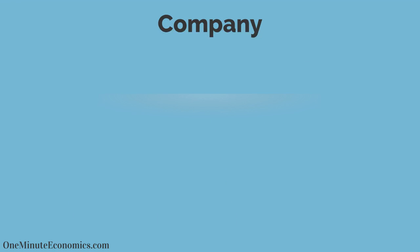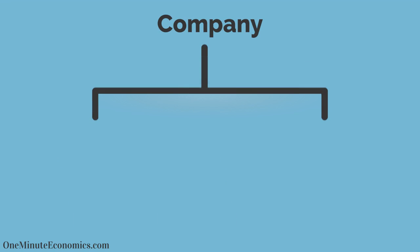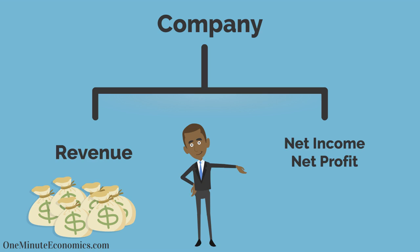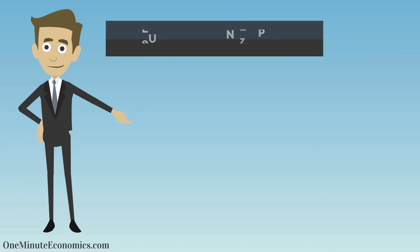A company's revenue is the amount it makes as a grand total through its various activities, whereas that company's net income or net profit is the amount it actually keeps after subtracting the various expenses that are involved — the bottom line, if you will. The net or bottom line profit margin is simply calculated by